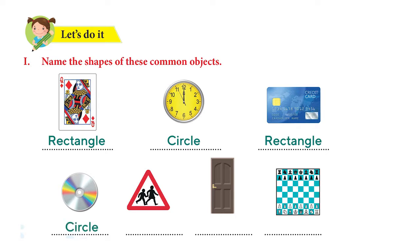The next one is a sign board. Is it a rectangle? No. Is it a circle? No — that's a triangle. You're correct. And how about this door? Is it a square? No, it's a rectangle. And the last one — that's a chess board. What shape is it? It is a square. Very good.